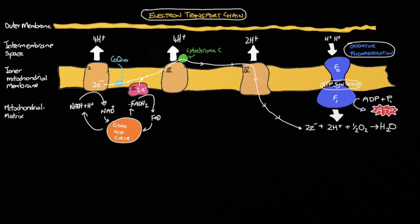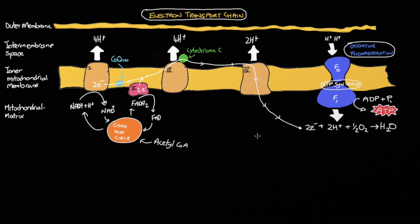One more note, you should be aware that acetyl-CoA fuels the citric acid cycle. As long as there is an abundant supply of acetyl-CoA, the citric acid cycle will continually produce NADH and FADH2, which in turn fuels the electron transport chain to generate ATP via oxidative phosphorylation.